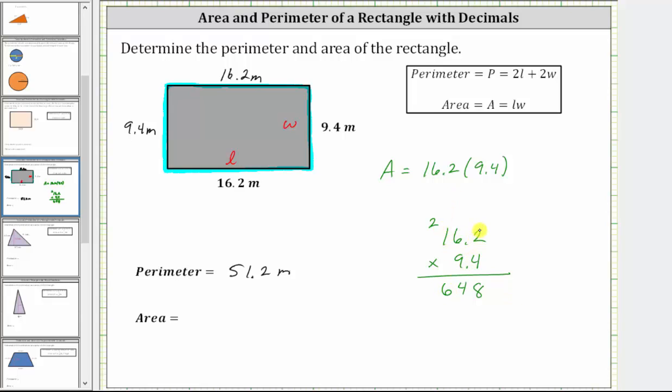Before multiplying by the nine, we place a zero below the eight. And now we multiply. Nine times two is 18. Record the eight. Perform an exchange with the one. Nine times six is 54, plus one is 55. Record the five. Perform an exchange with the other five. Nine times one is nine, plus five is 14.